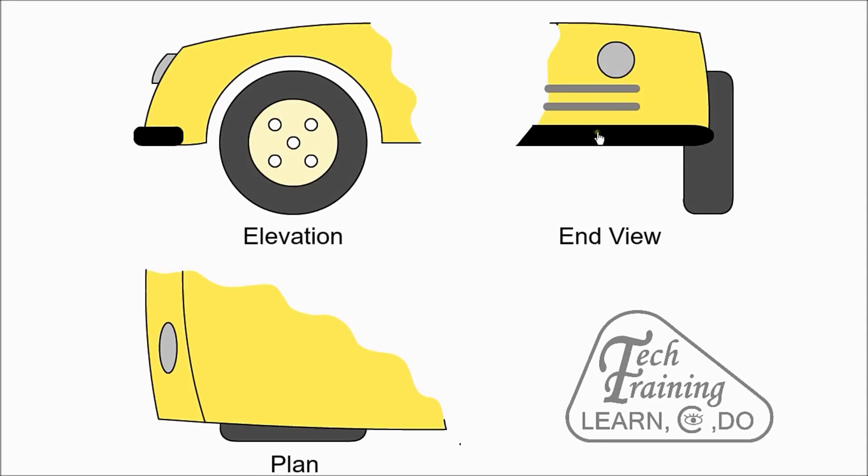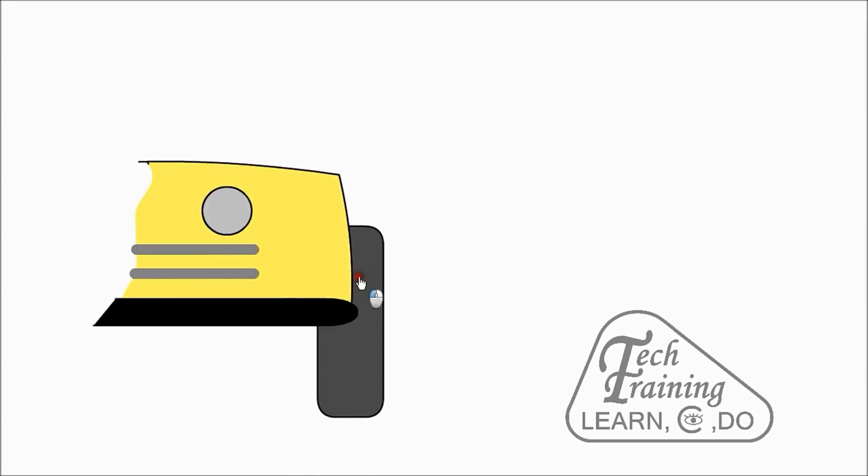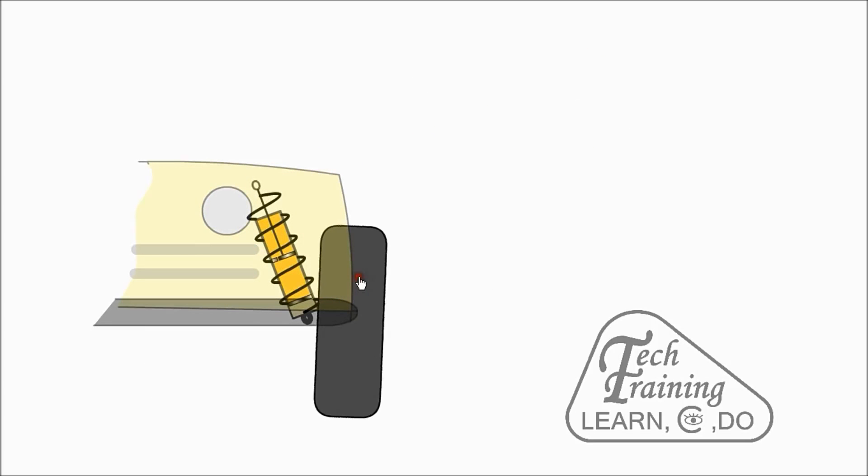When viewed from the front, the tilt of the wheel is called camber. If the wheels lean out at the top, it is called positive camber. With negative camber, the bottom of the tyre is further out than the top. This helps to improve cornering ability.